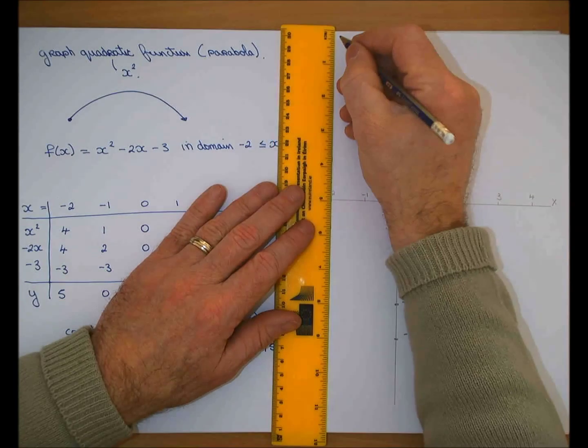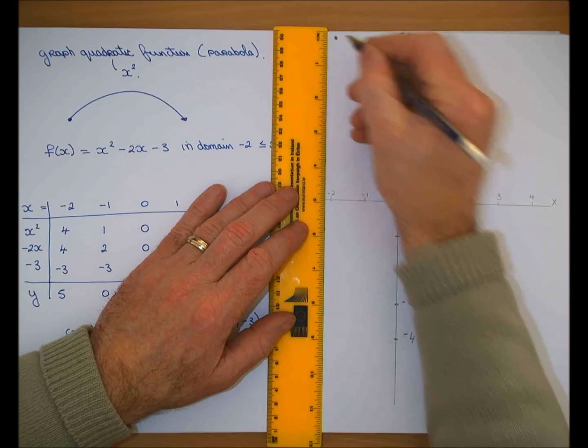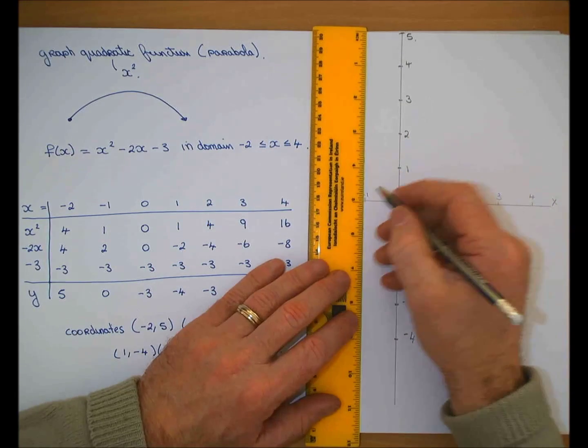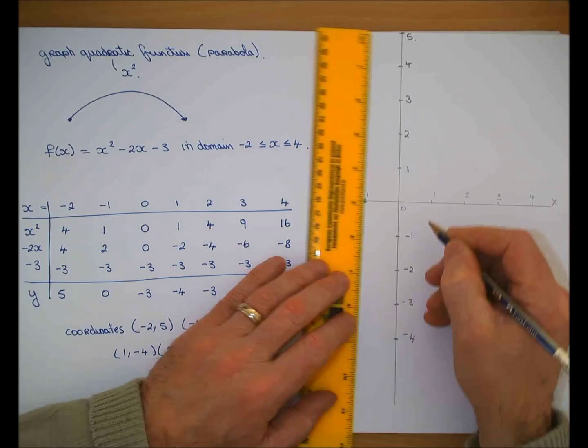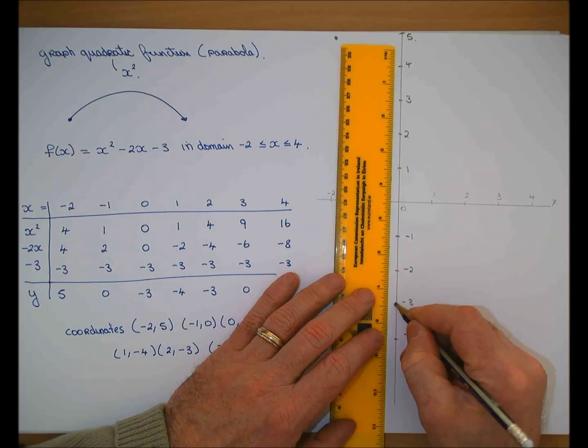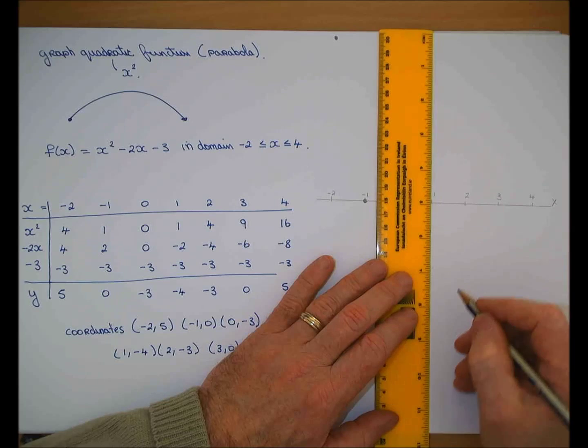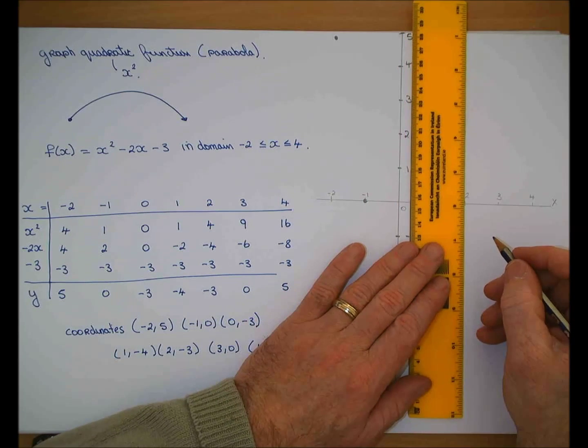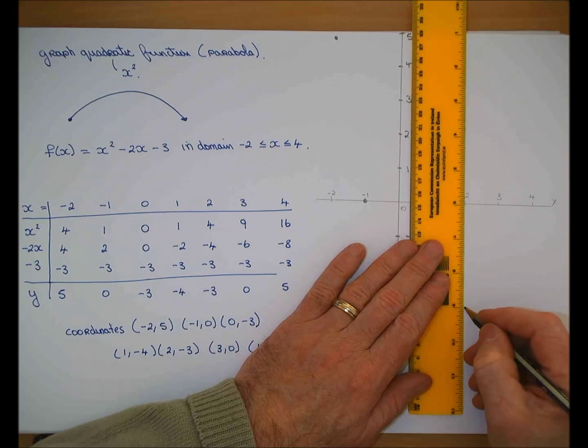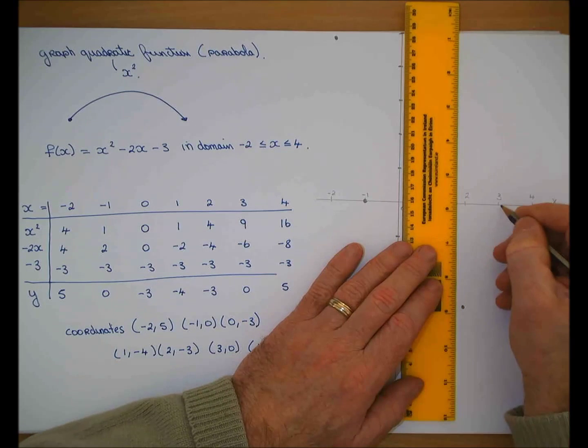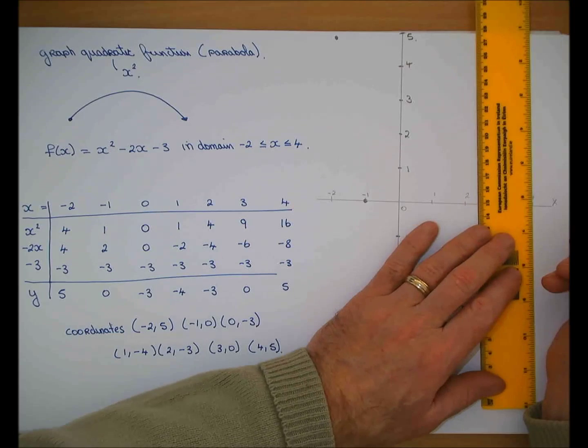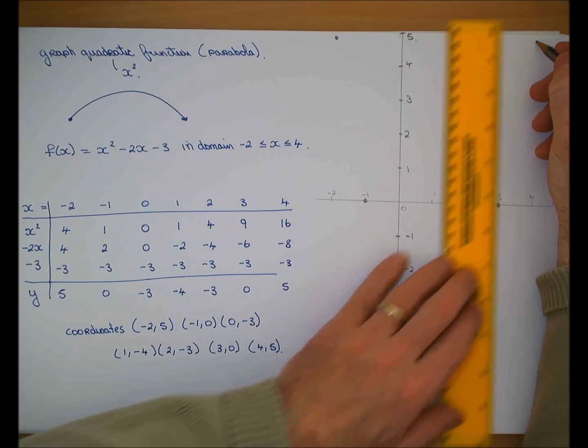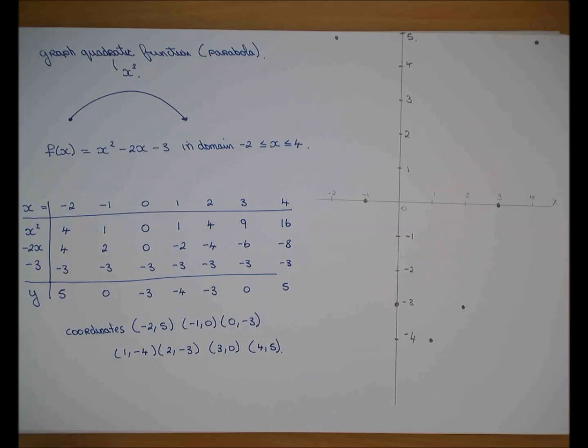Minus 2, 5. Minus 1, 0. 0, minus 3. 1, minus 4. 2, minus 3. 3, 0. 4, 5. Do you understand those set of points?